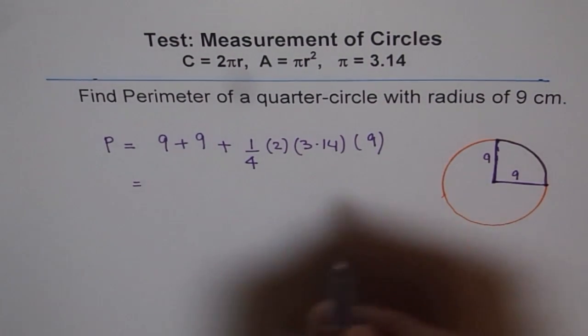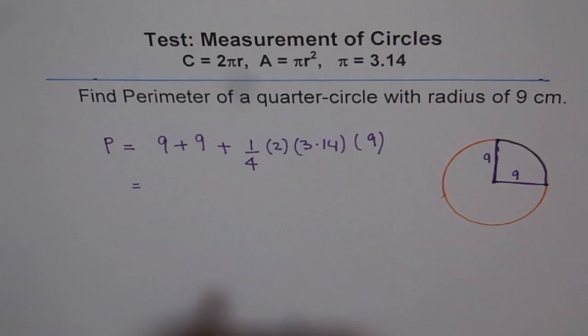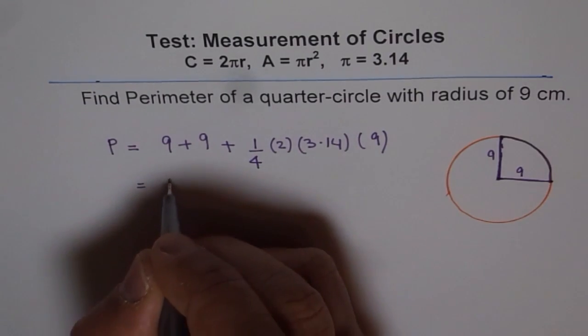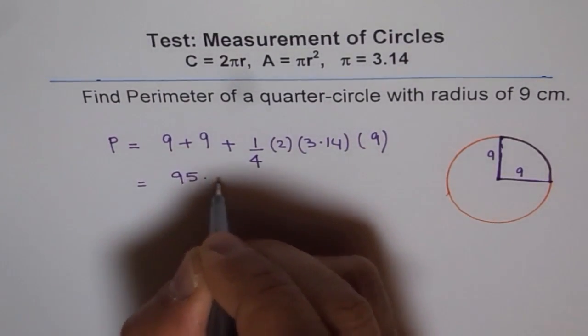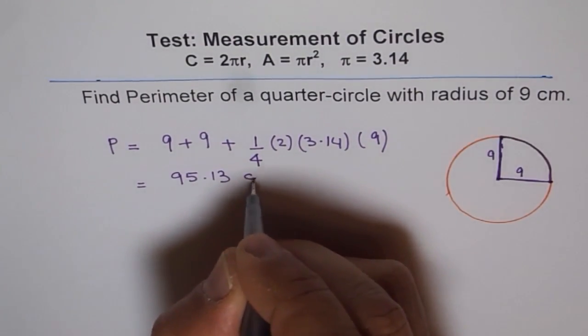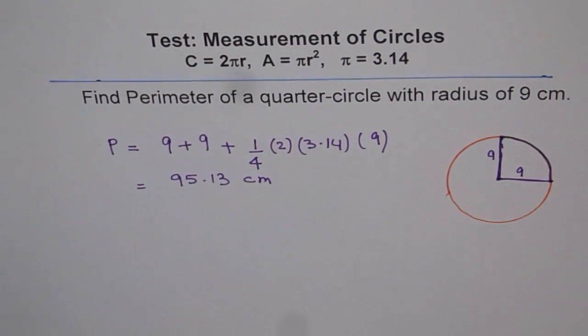Now you can add them up, use your calculator and find the answer. So we get 9 plus 9 plus... So we could simplify, but let's write 2 times 3.14 times 9 divided by 4 equals to 95.13. We get 95.13 cm. So that is the perimeter of quarter of a circle.